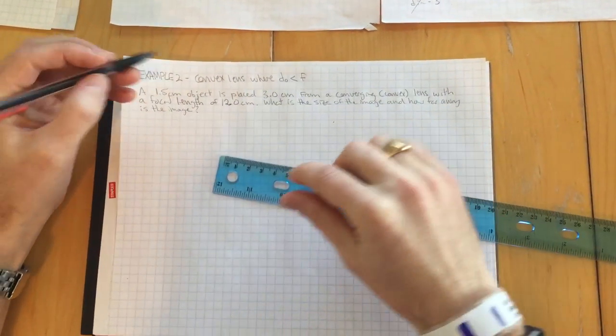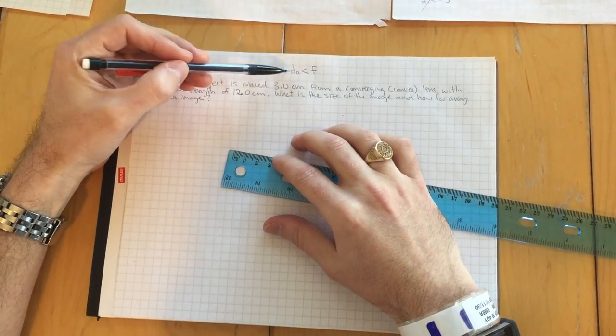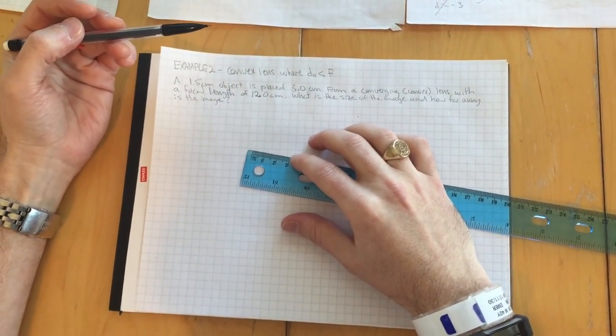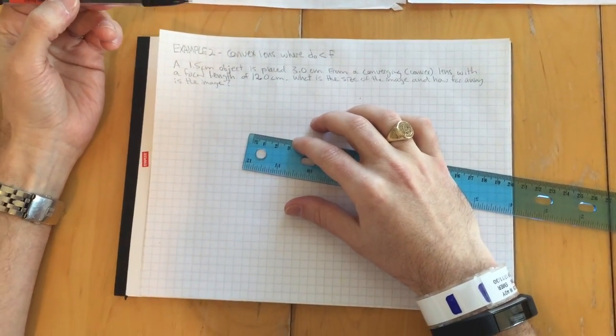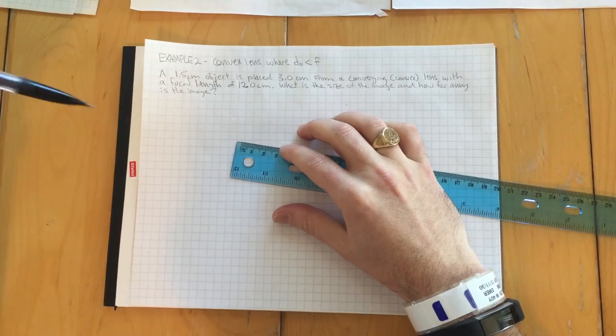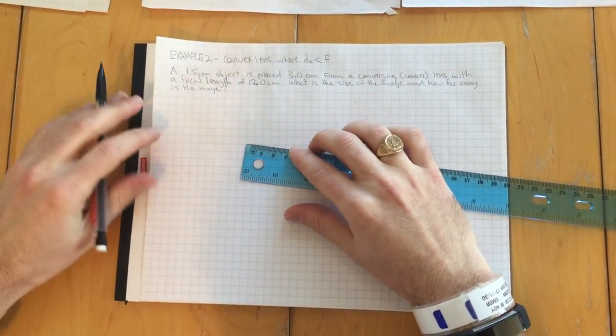Okay, this is example two, a convex lens again, but this time the object will be placed within the focal length. So if you watch video one, you know there was no take two. We'll be sending that video to the hair club for men to see if they can do something for me. We'll try to have a little higher production value on this one.